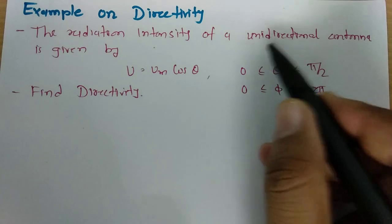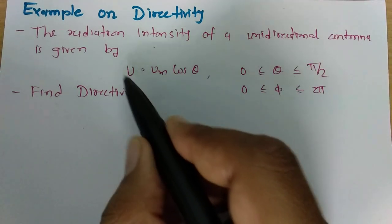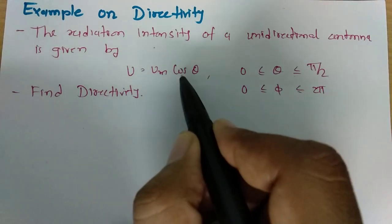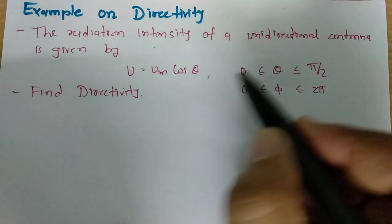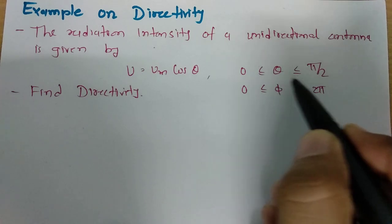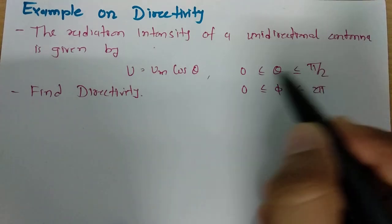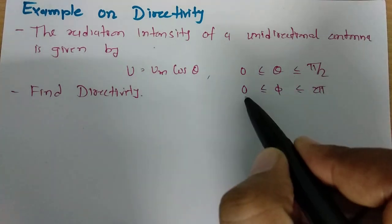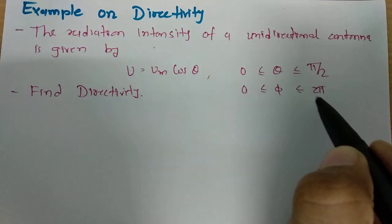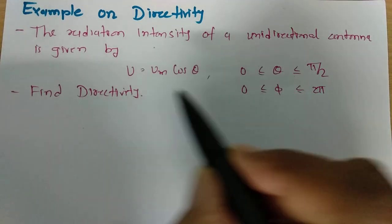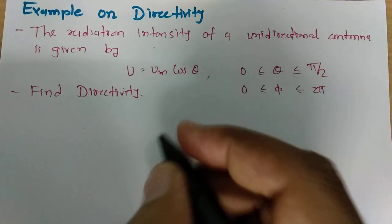The radiation intensity of a unidirectional antenna is given by U = Um·cos(θ), where θ varies from 0 to π/2 and φ varies from 0 to 2π. Our aim is to calculate the directivity.